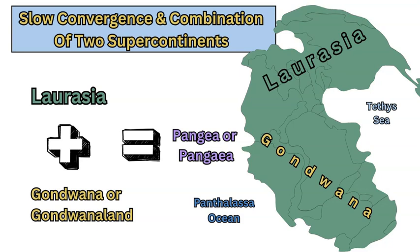The northern hemisphere mass of land was called Laurasia — Laurentia, which is North America, plus Asia — so it included North America, Greenland and Eurasia. Then we had the southern hemisphere section, all connected, called Gondwana or Gondwana Land, which included Africa, South America, Australia as a landmass, Antarctica and also the Indian subcontinent.